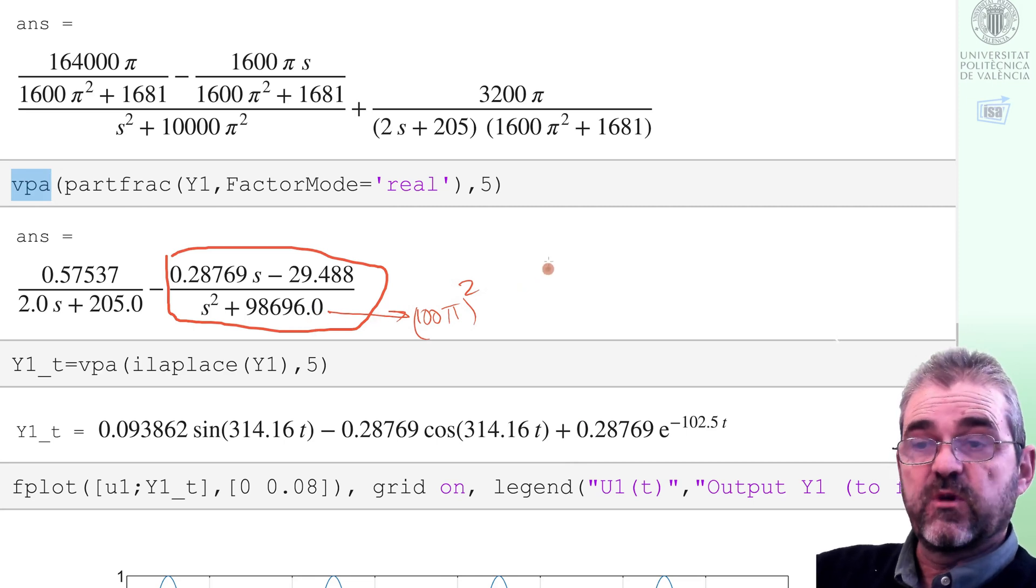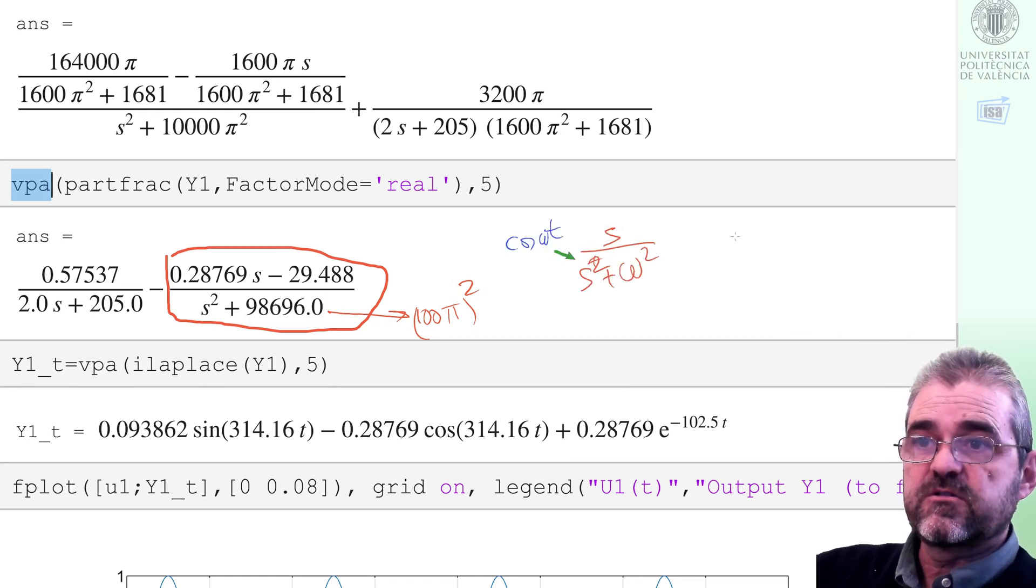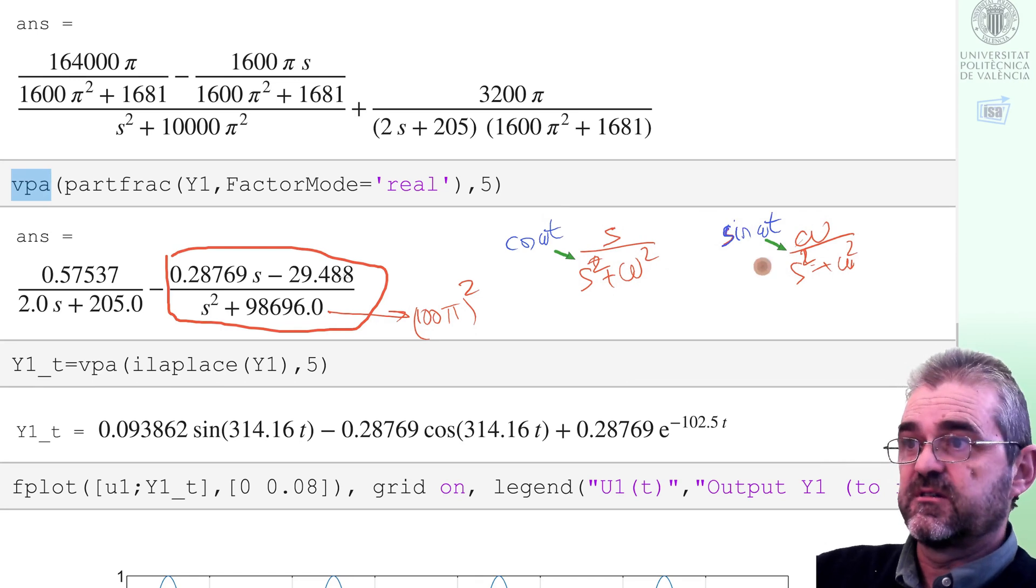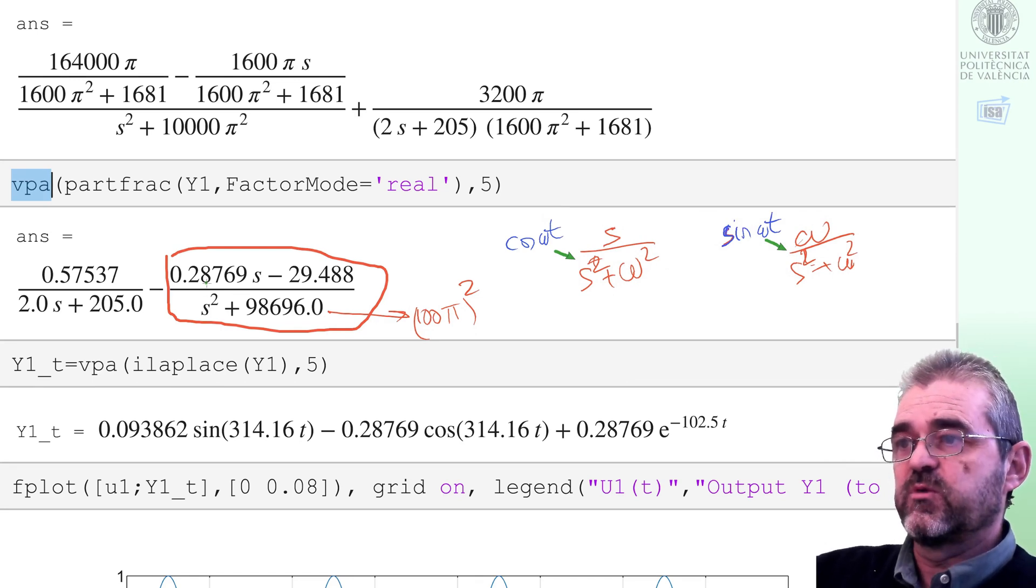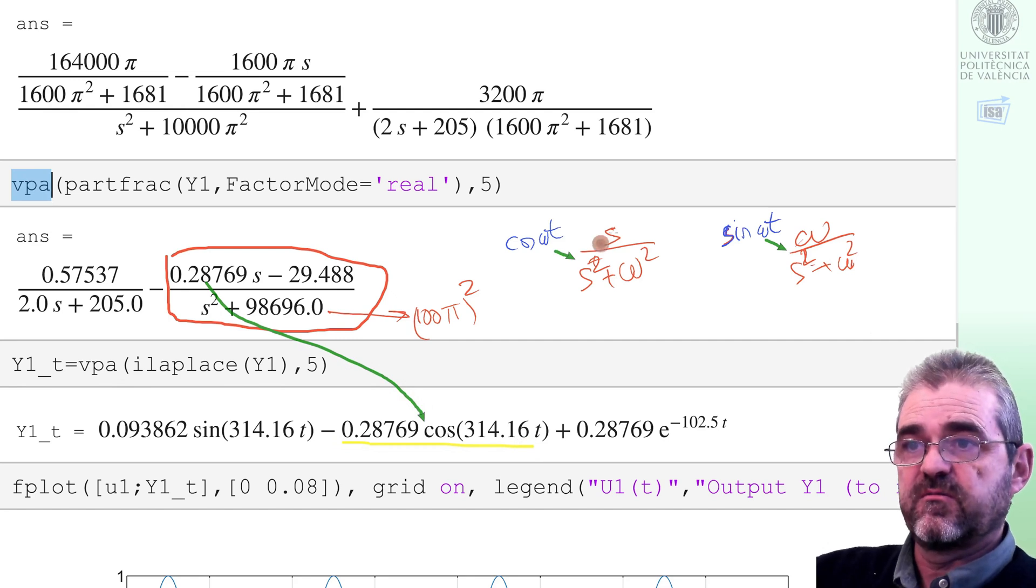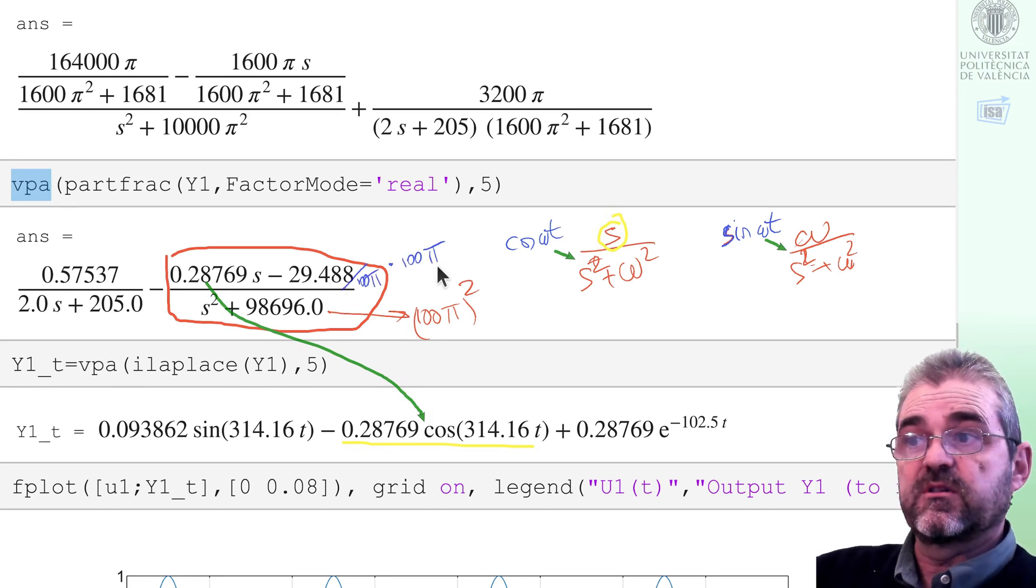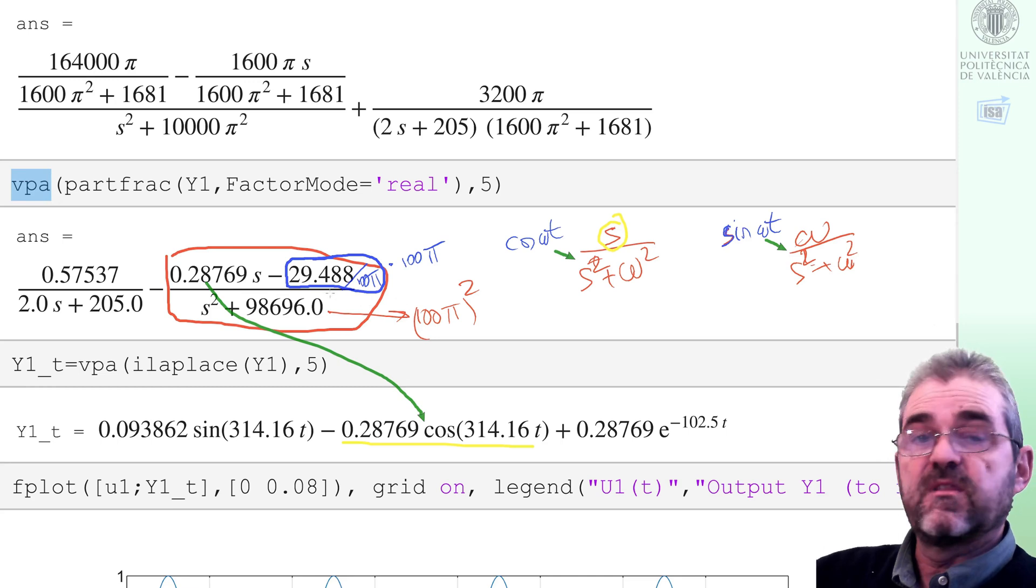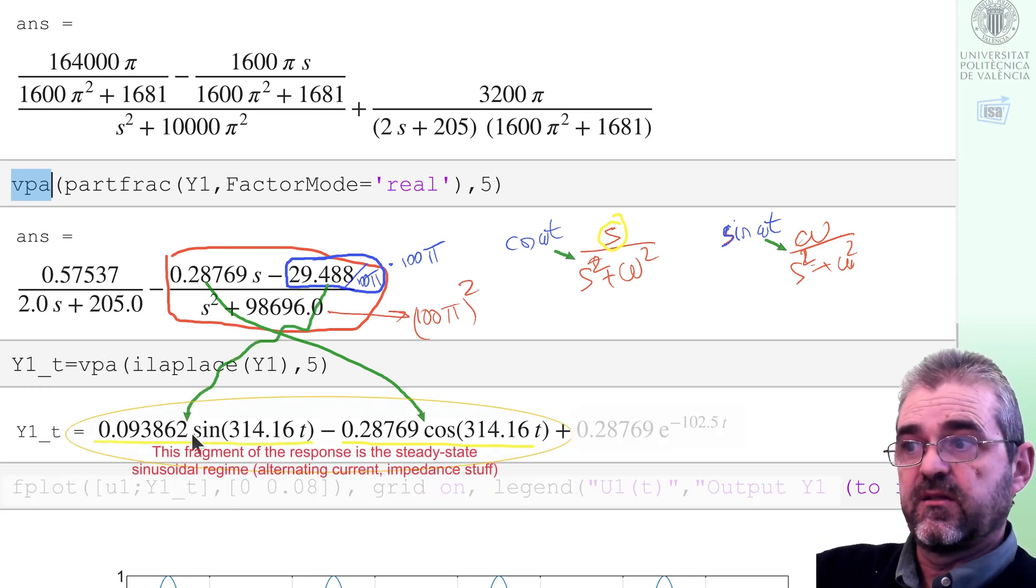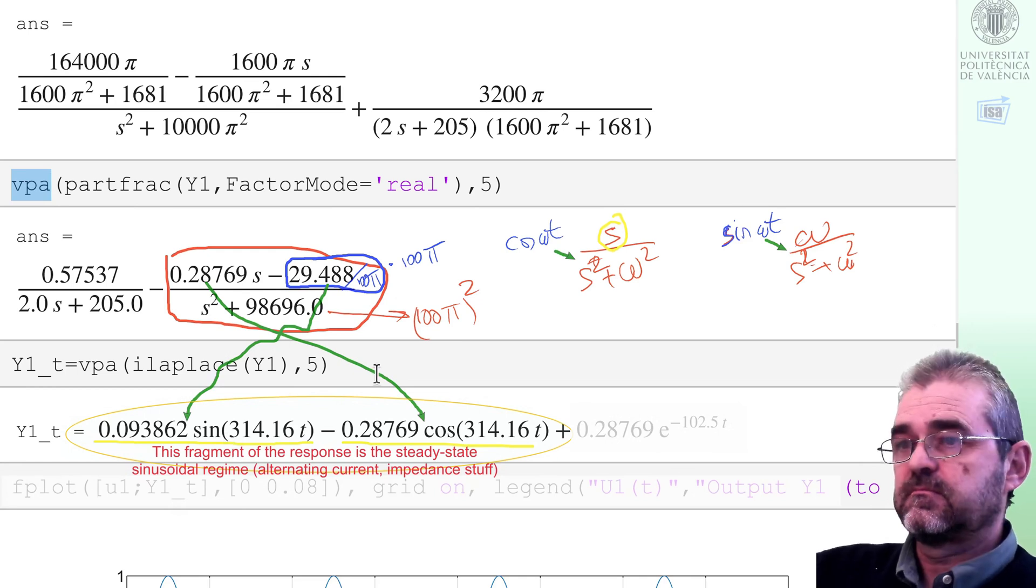This is omega square, corresponds to a combination of cosinus and sinus. Once I look into Laplace transform tables, indeed 0.28 is the thing that multiplies cosinus because of the s here, and if I multiply and divide by 100 pi, this coefficient will be the one yielding the sinus term.